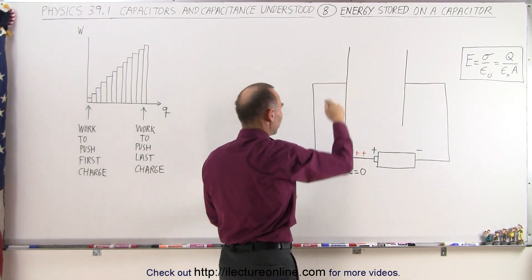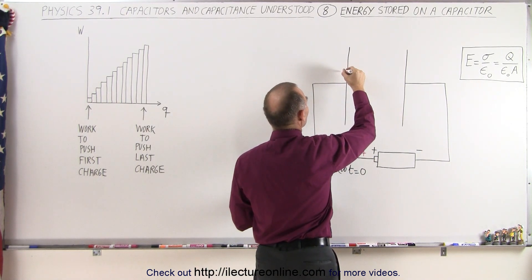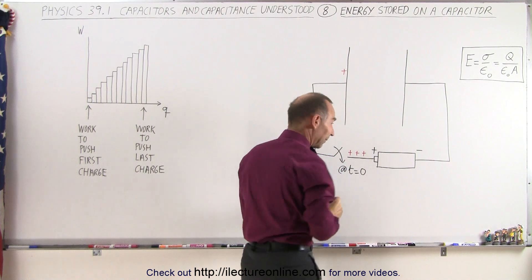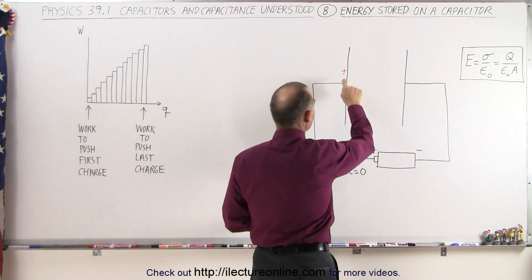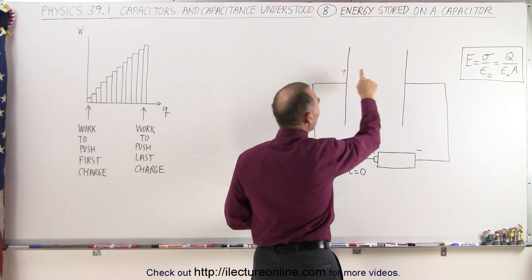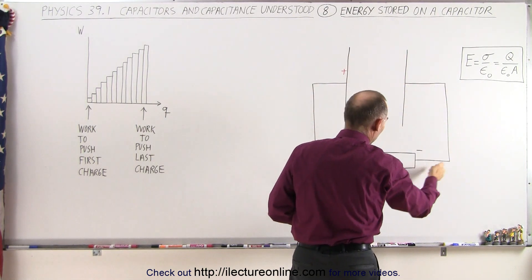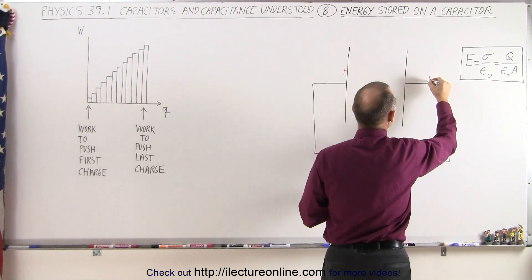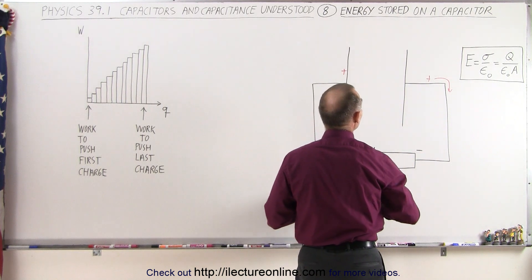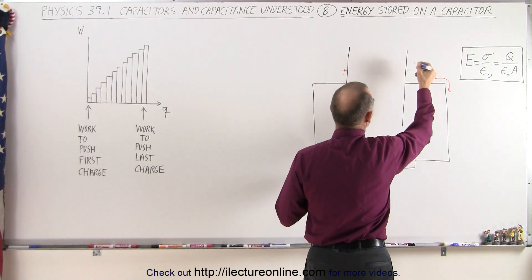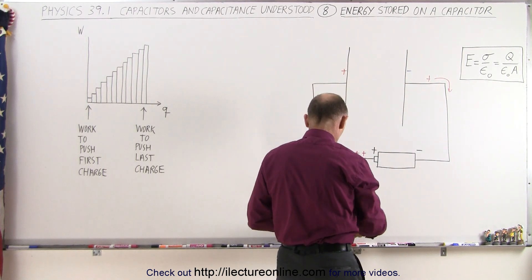Now charges will begin to flow. The way this works is: first one charge comes in and settles down onto the capacitor plate. It has lots of room, so no other charge is pushing it away. But this charge here will push a charge over here away, and so that charge will now go to the battery. That causes this plate now to have a negative charge — an excess of one negative charge — because this charge pushed a positive charge away.